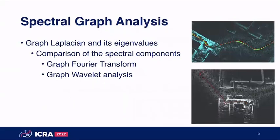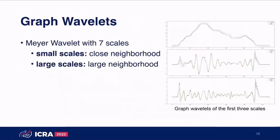In this work we use techniques from spectral graph theory to find inconsistencies between the server and the robot graph. For example, we use the graph Fourier transform and also the graph wavelet transform — in particular the Meyer wavelet with seven scales. Wavelets are quite interesting because they can be localized on specific nodes and describe structural properties, where smaller scales describe the structural properties of closer neighborhoods whereas larger scales describe them from a more global view.